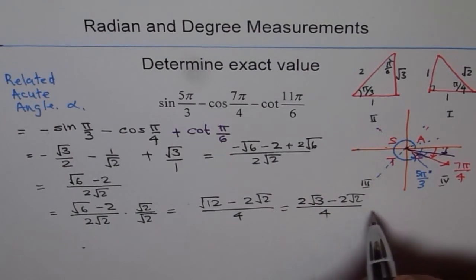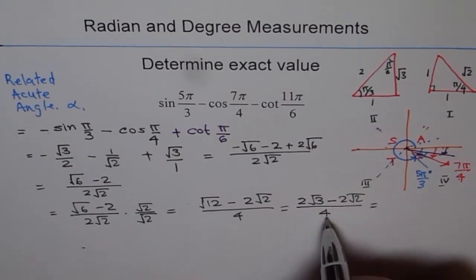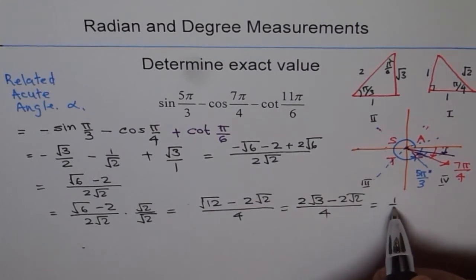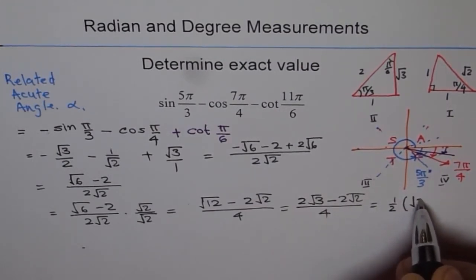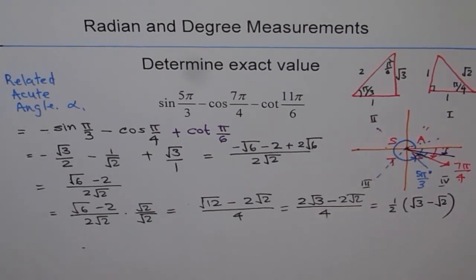This can be simplified and so I can write this as 2 will cancel. So half remains. So you get half of square root 3 minus square root 2. So that is my final answer. So that is how you can get exact value of the given expression. Thank you.